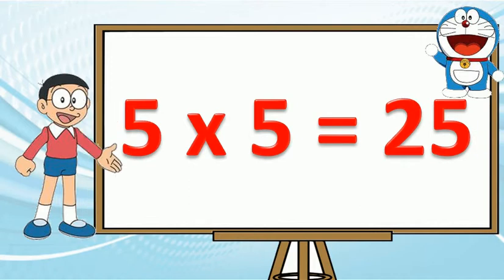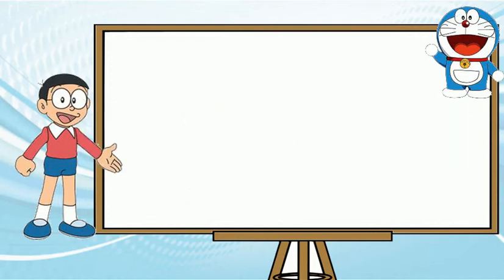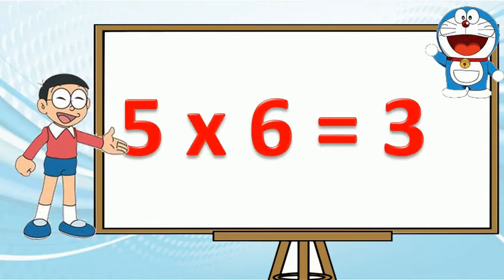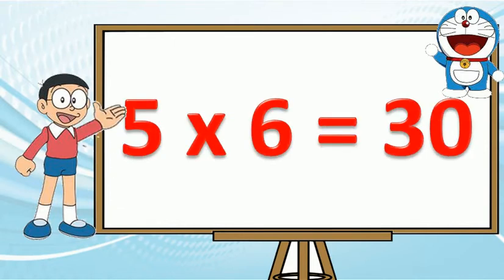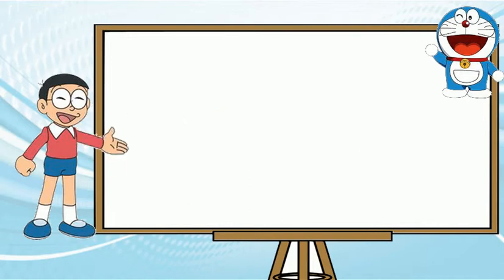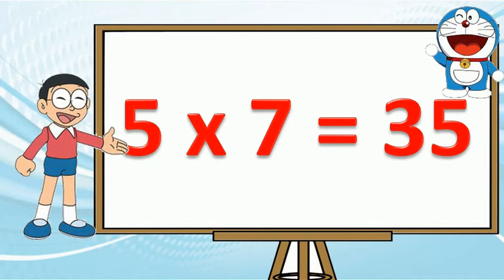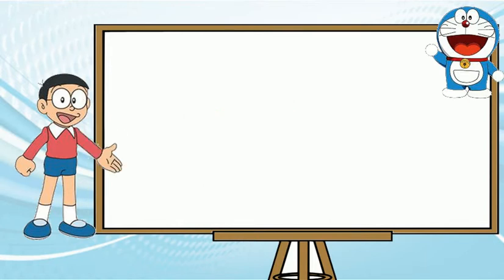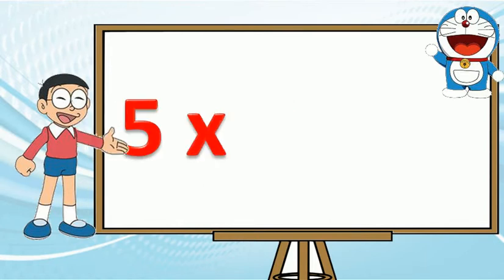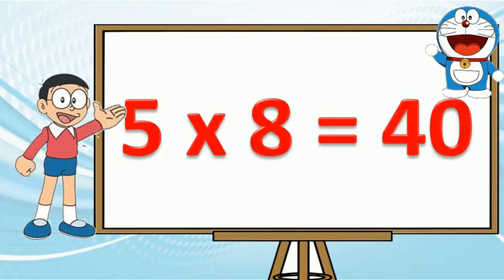5 fives are 25. 5 sixes are 30. 5 sevens are 35. 5 eights are 40.